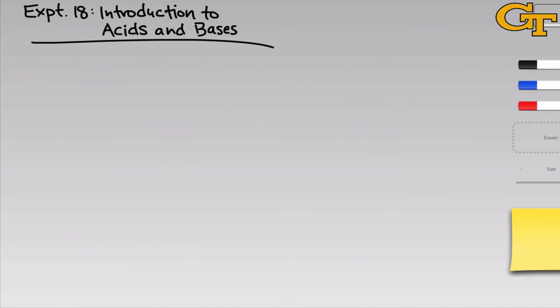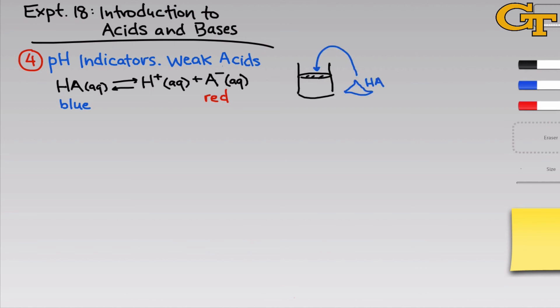In the final part of the experiment, we'll investigate pH indicators which qualitatively indicate the pH of a solution as acidic or basic. pH indicators are weak acids and so they're characterized by this acid dissociation process in water that involves HA breaking apart into solvated proton and the conjugate base A-. But the neat thing about an indicator is that its conjugate base and acidic form are different colors. So in this video, I'll use the example of a conjugate base that's red and an acid form that's blue.